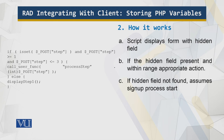The script displays a form with a hidden field. If the hidden field is present and within range — one, two, or three — the appropriate action is taken. If the hidden field is not found, we assume that the signup process has just started. So when the value is neither one, nor two, nor three, it means the signup process is starting and that initial code is executed.